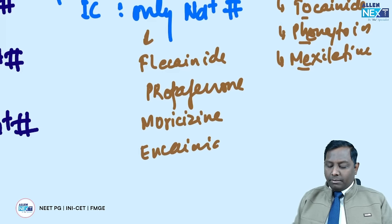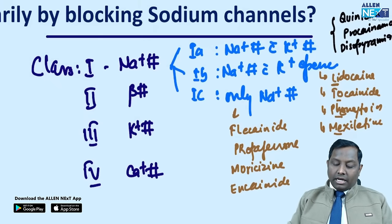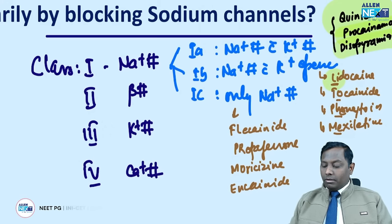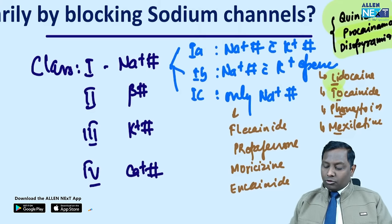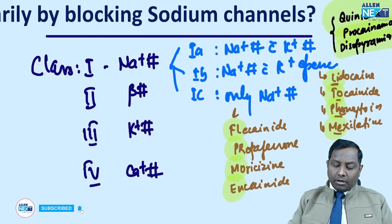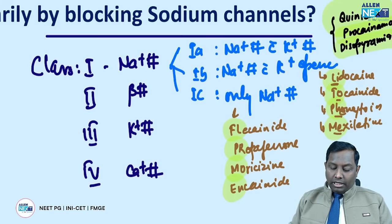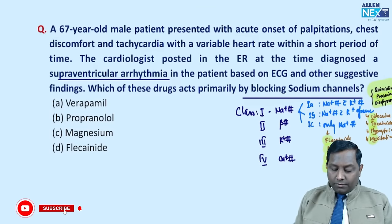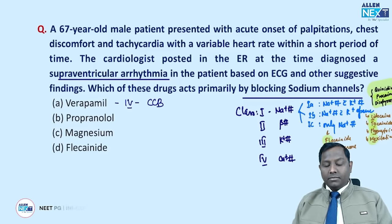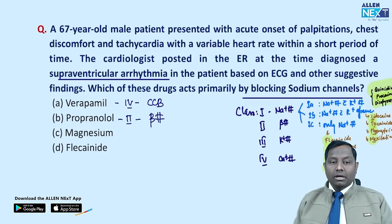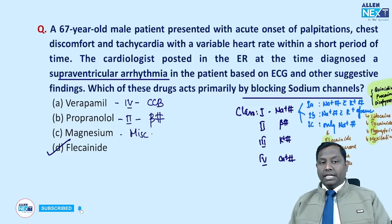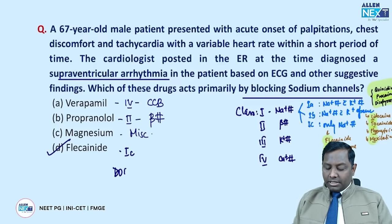So in the kingdom mnemonic: Class 1A = queen, prince, and dasi (quinidine, procainamide, disopyramide); Class 1B = brave people who phone you (lidocaine etc.); Class 1C = floor mopping workers (flecainide, propafenone, moricizine). Verapamil is Class 4 (calcium channel blocker), propranolol is Class 2 (beta blocker), magnesium is miscellaneous. Flecainide (Class 1C) is the correct answer — a pure sodium channel blocker, and also the drug of choice in WPW syndrome.